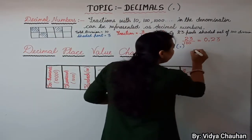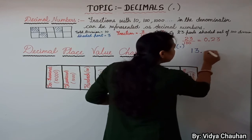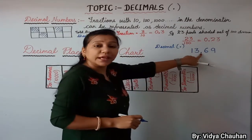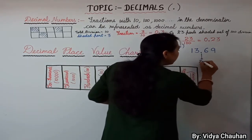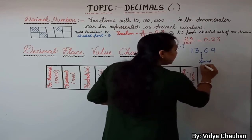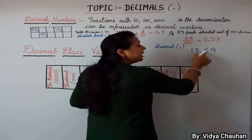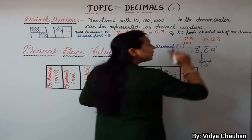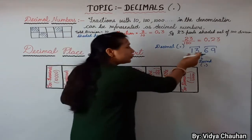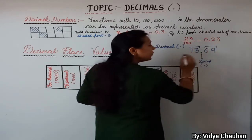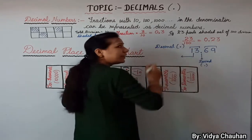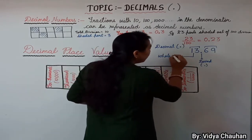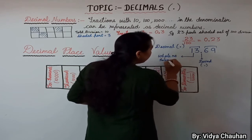Suppose we take the number 13.69. The decimal sign is here, dividing the number 13.69 into two parts — one part on the left hand side and one part on the right hand side. The portion on the left hand side, that is before the decimal, is called the whole number or integral part.